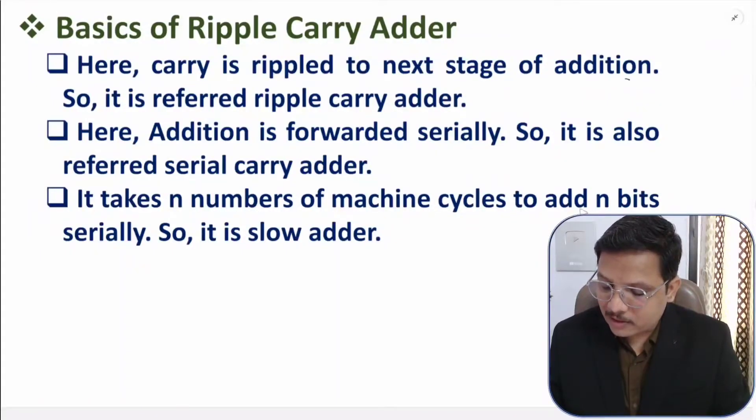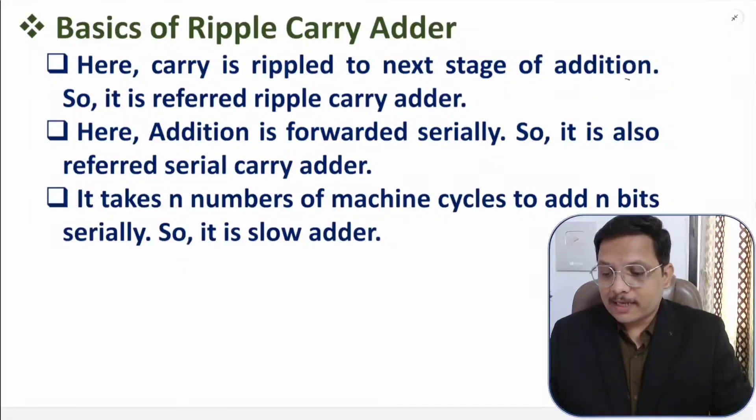It takes n number of machine cycles to add n bits, which is why it is slower. The process is slow because addition is happening serially. We discussed only 4 bits here, but think about the case where you need addition of 50 bits — it will take 50 machine cycles. Every full adder requires one machine cycle in serial adder, so the resultant addition process is slow. To have faster operation, you should use parallel addition. In the next video, I will explain you parallel adder, also referred as carry look-ahead adder, which is very fast compared to serial adder.